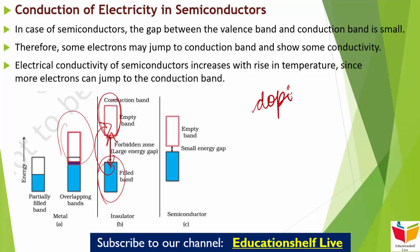तो doping से हम इनमें impurities add करते हैं। Doping में impurity या तो electron rich हो सकती है या electron deficient — as compared to the intrinsic semiconductor like silicon और germanium। ऐसी impurities electronic defects create करती हैं जिसकी वजह से उनमें electrical conductivity increase हो जाती है।